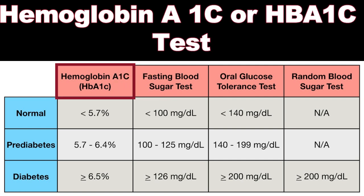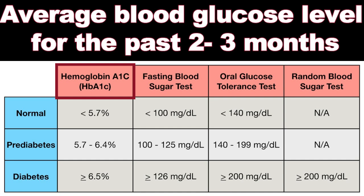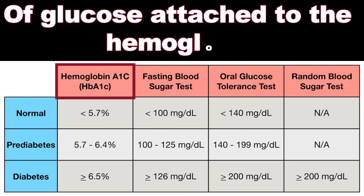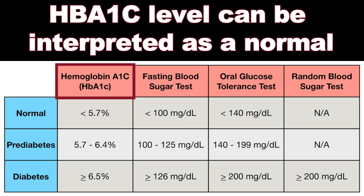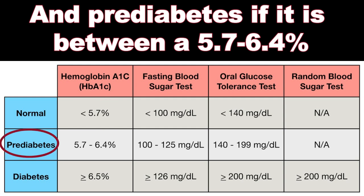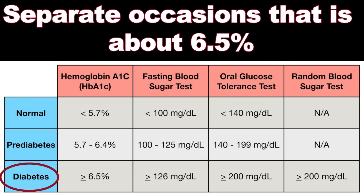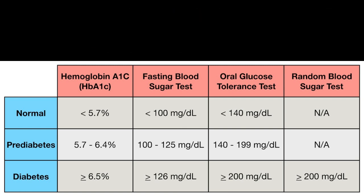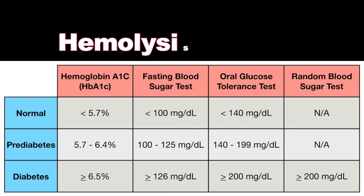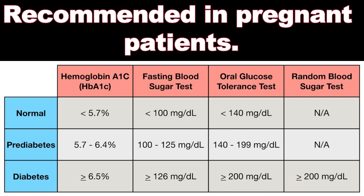The HbA1c test is a simple blood test that measures the patient's average blood glucose level for the past 2 to 3 months by measuring the amount of glucose attached to hemoglobin. HbA1c does not require the patient to fast. Results are interpreted as: normal if less than 5.7%, prediabetes if between 5.7% and 6.4%, and diabetes if higher than 6.5% on two separate occasions. HbA1c is affected by red blood cell turnover, so it should not be used diagnostically in patients with hemoglobinopathies, hemolysis, iron deficiency anemia, or HIV, and is not recommended in pregnant patients.